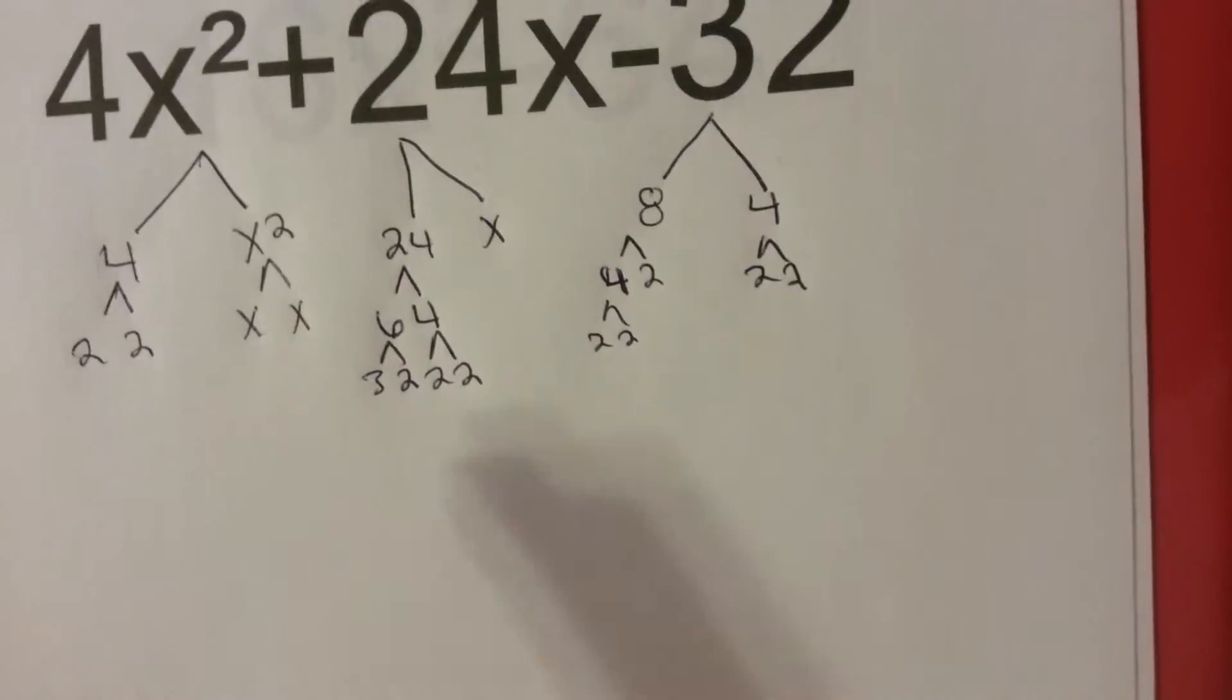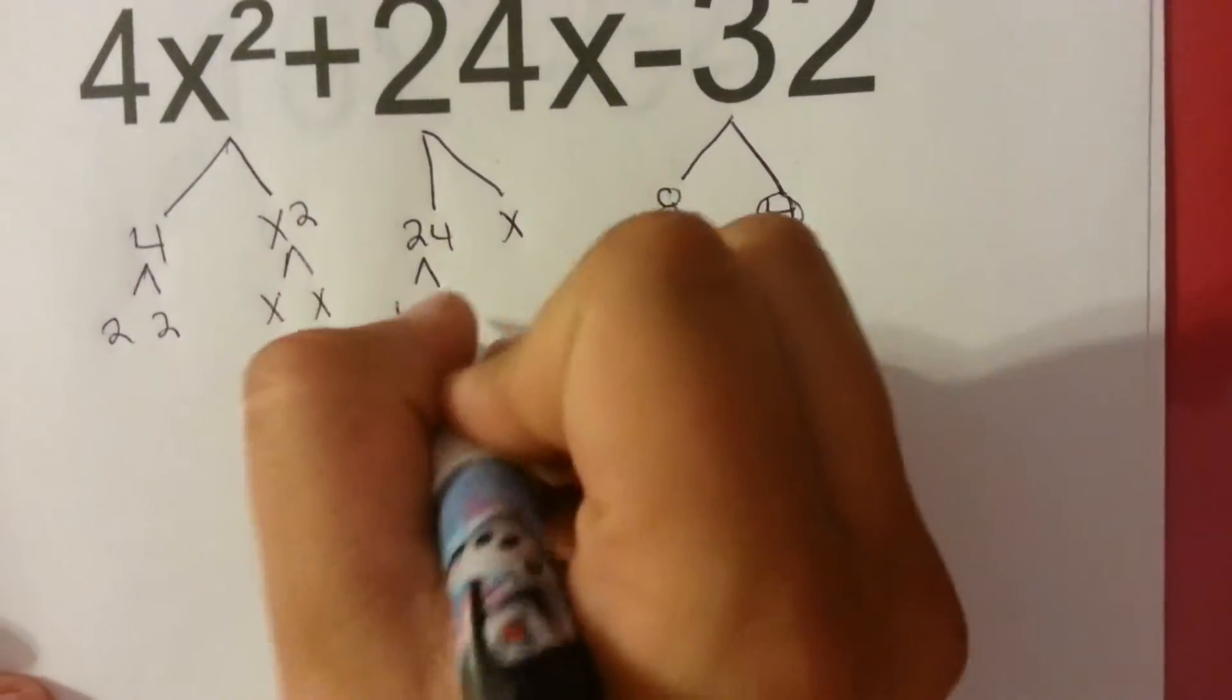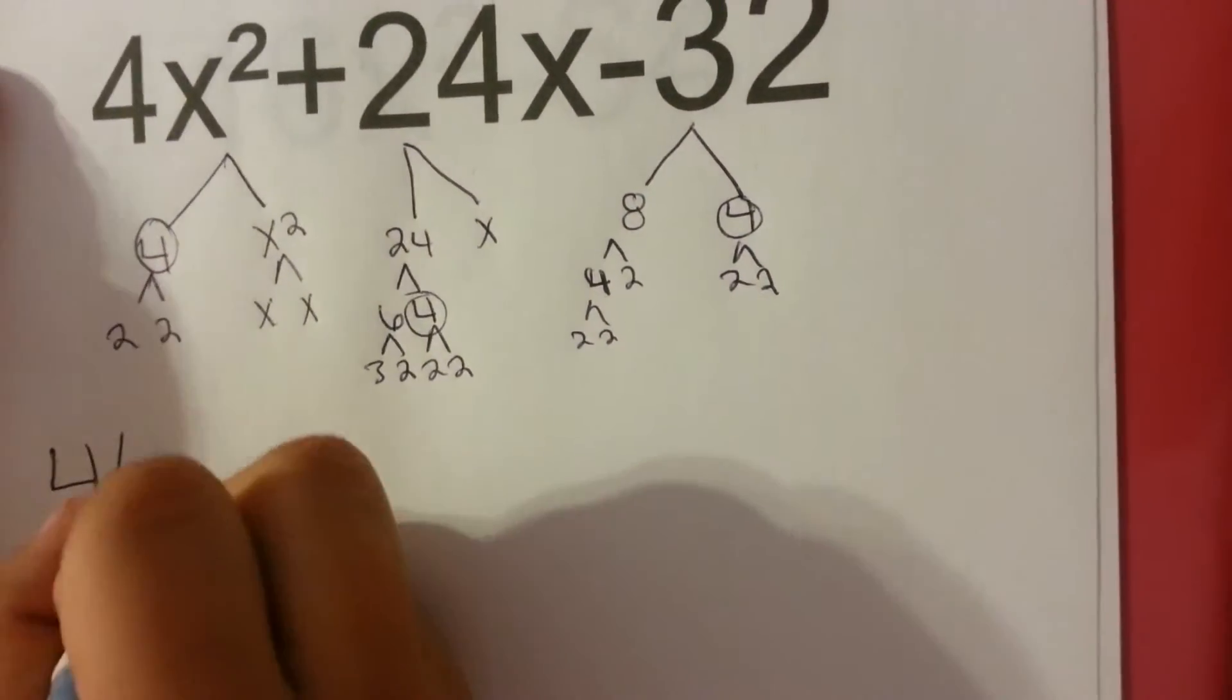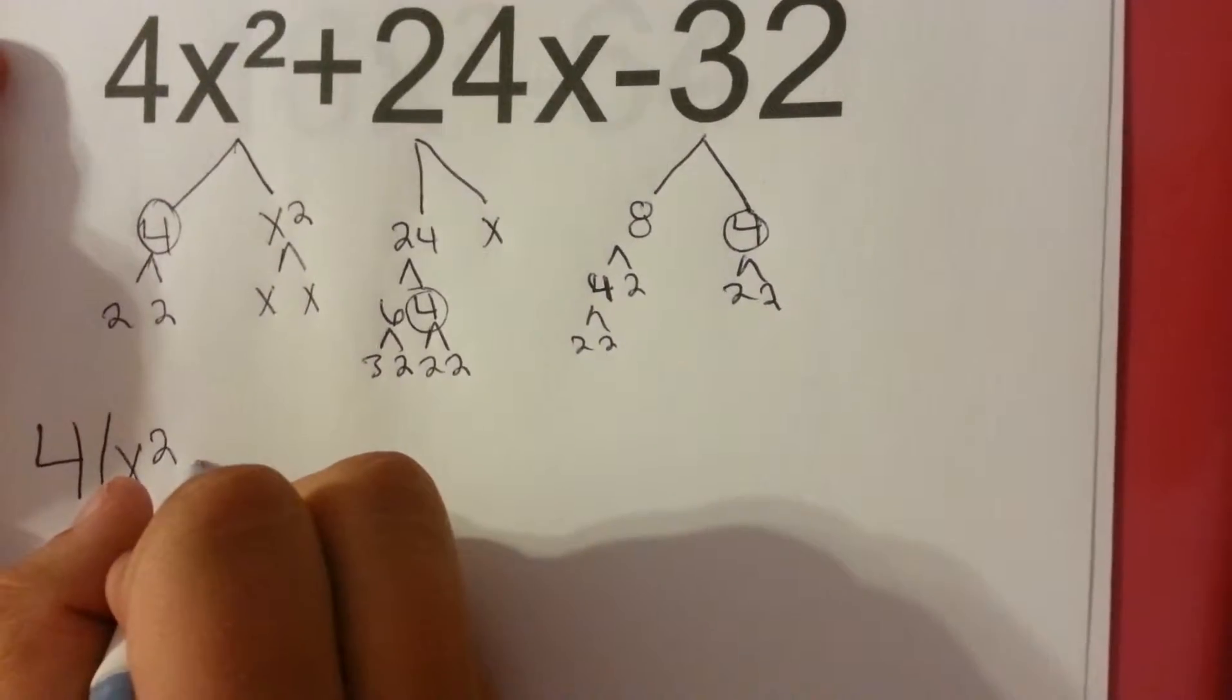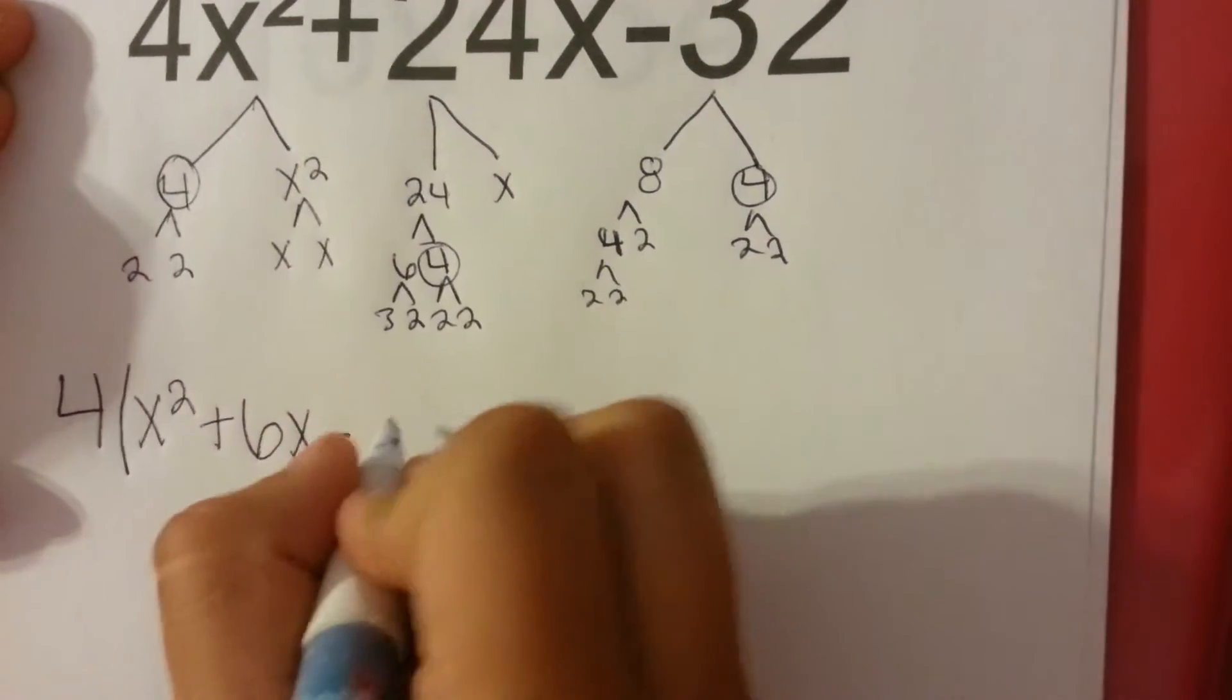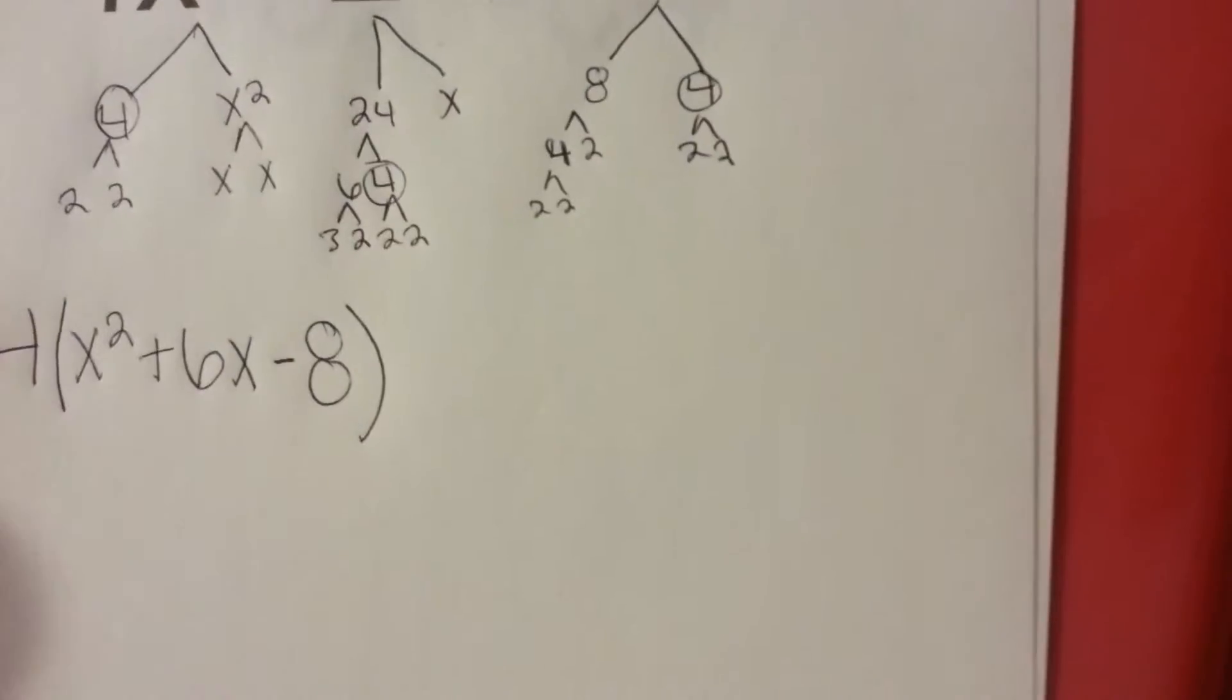I could take 2 out of each of them, or I see that there's 4 in each of them. So I'm going to take 4 out of each section and put it on the outside of the parenthesis. It's going to be 4 on the outside,